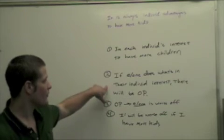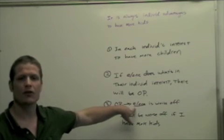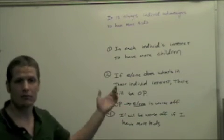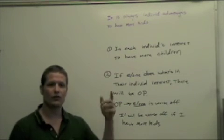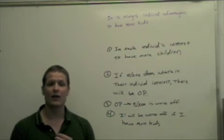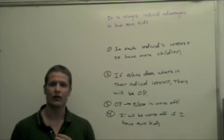Why? Because with overpopulation, everyone is worse off. I am one of everyone. And so it means that I will be worse off if I choose to do what seems to be initially in my individual self-interest.